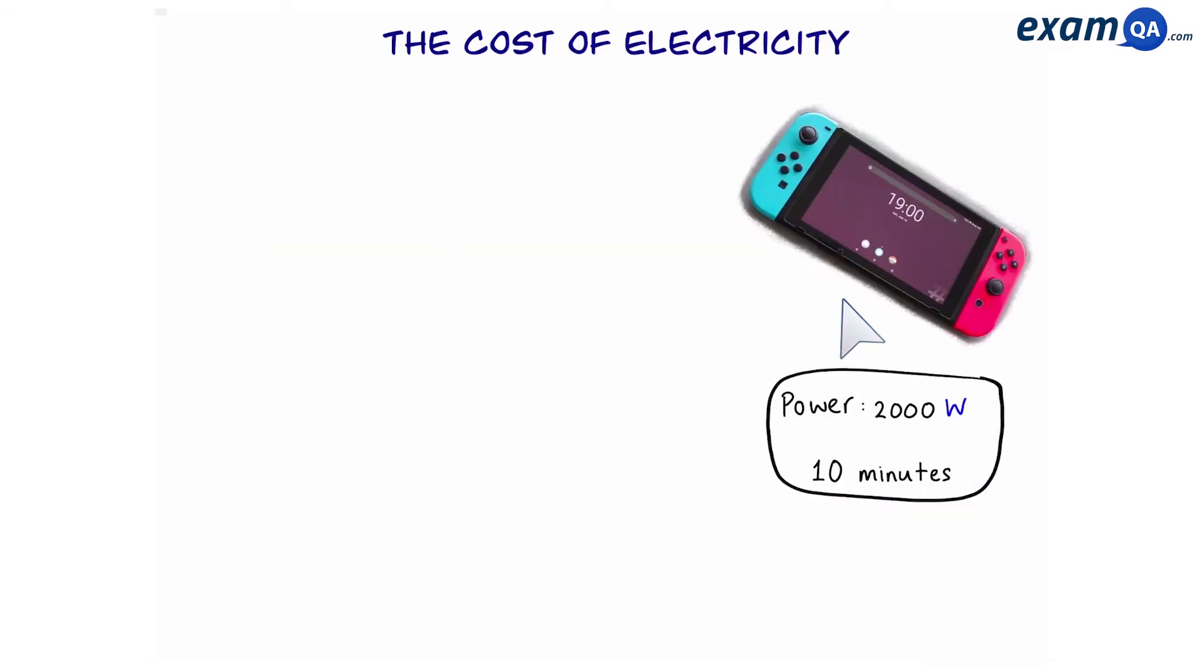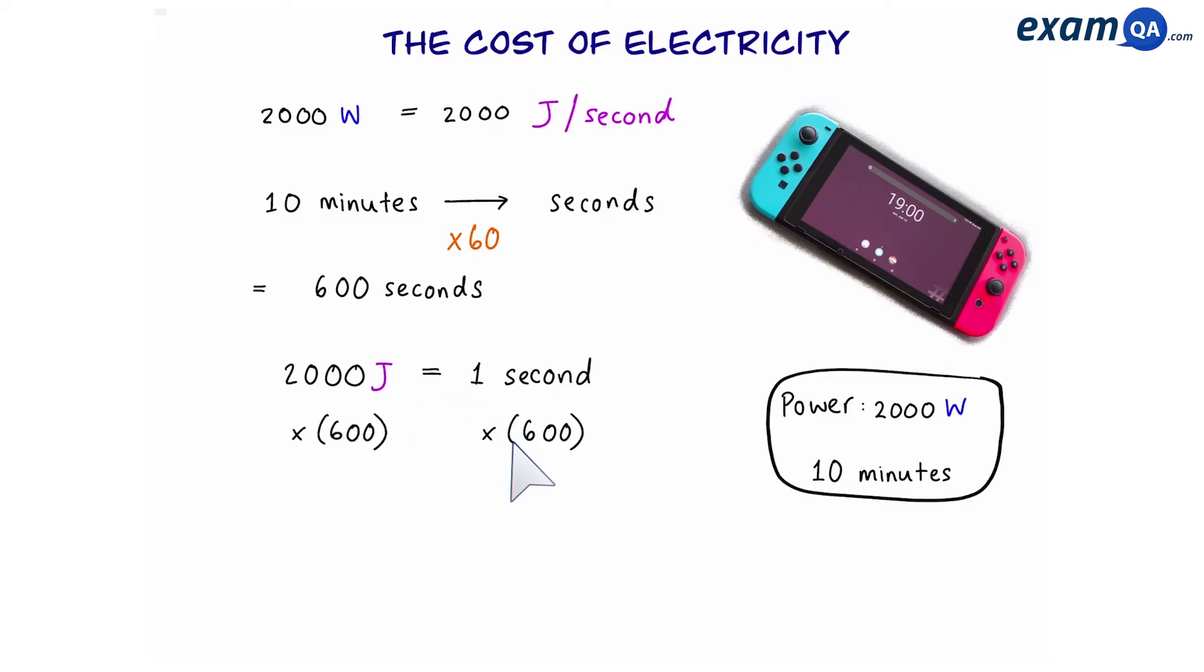Final example. The games console has a power rating of 2000 watts which means 2000 joules of electrical energy are used every second. We use it for 10 minutes, so converting that into seconds by timesing by 60 gives us 600 seconds. So 2000 times 600 gives us 1,200,000 joules divided by a thousand which gives us 1,200 kilojoules.